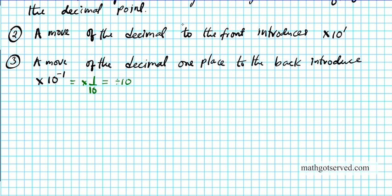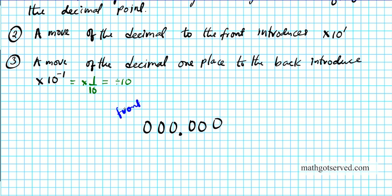Let me give you a visual. Say we have a number with a decimal point here — this position is the front, the first digit. If I move the decimal point one place to the back, I've multiplied this number by ten, so to compensate I multiply by ten to the negative one. Move it another place to the back — that's another times ten to the negative one. Move it one more place — another times ten to the negative one.